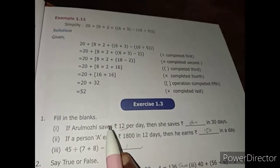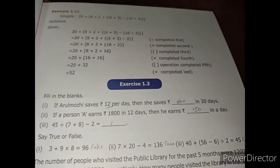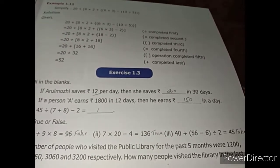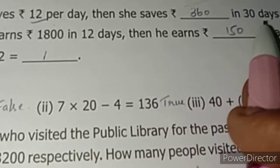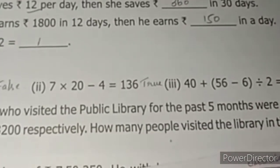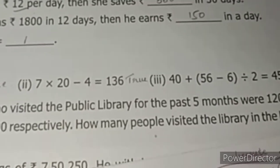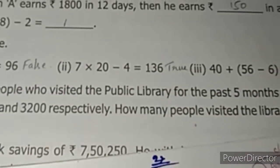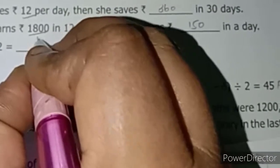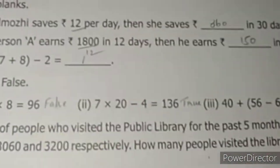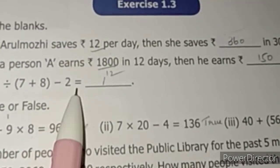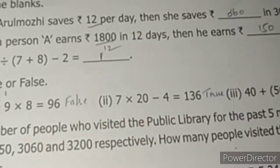Exercise 1.3, fill in the blanks: if Arulmozhi saves Rs. 12 per day, then in 30 days she saves 12 × 30 = Rs. 360. Next: if a person earns Rs. 1,800 in 12 days, then per day he earns 1,800 ÷ 12 = Rs. 150. The simplify answer from earlier is 1.